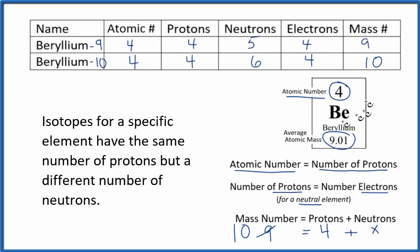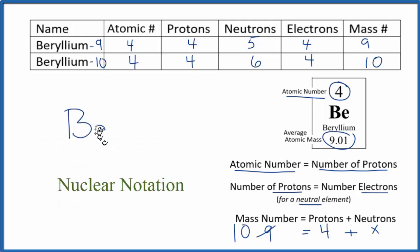Sometimes you'll see beryllium written like this here. You'll have Be, and then the atomic number will be down here, four, and the mass number, let's say nine, will be up here. This is called nuclear notation.